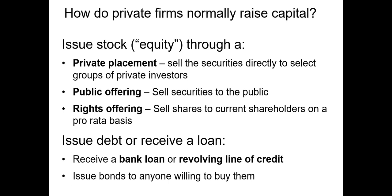The last way that firms often raise new capital via a stock issuance is through a rights offering. In this case, the firm allows current shareholders the opportunity to buy shares proportionate to their ownership of the firm's total shares. For example, if Berkshire Hathaway owns 5% of the shares outstanding of Coca-Cola and Coca-Cola wants to raise $100 million via a rights offering, the firm will allow Berkshire Hathaway to purchase up to 5%, or $5 million worth, of the new shares.